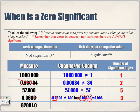For 82001.0 — the zeros in between the non-zero numbers are between other digits, so we know right away they're significant. We don't need to apply the change-or-no-change rule. And if I remove the trailing decimal zero, the two values are the same — so that zero is also significant. How many significant digits in 82001.0? Six.